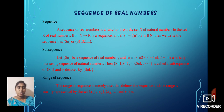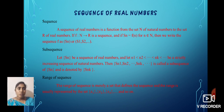Next, we define subsequence. Let {Sn} be a sequence of real numbers and let n1, n2, up to nk be a strictly increasing sequence of natural numbers. Then the sequence Sn1, Sn2, up to Snk is called a subsequence of {Sn} and it is denoted by {Snk}.